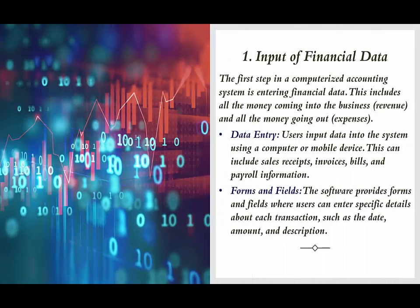Input of Financial Data: The first step in a computerized accounting system is entering financial data. This includes all the money coming into the business — revenue — and all the money going out — expenses. Users input data into the system using a computer or mobile device. This can include sales receipts, invoices, bills, and payroll information.